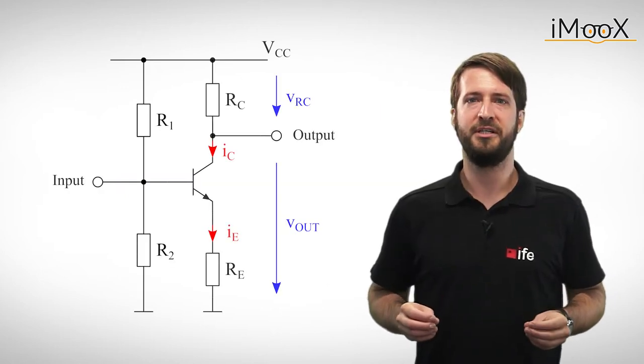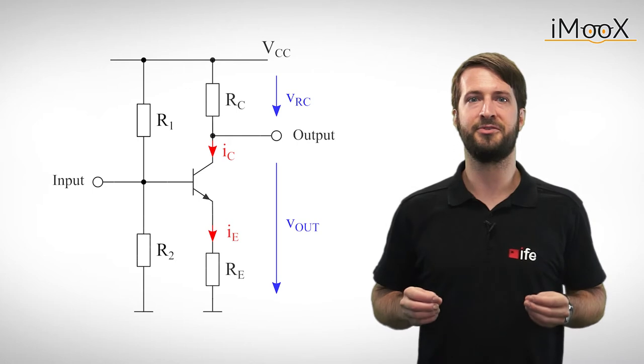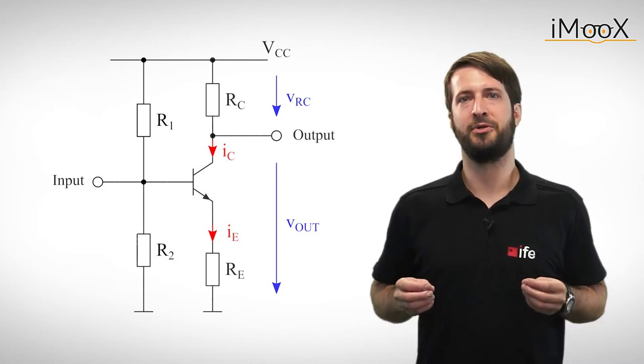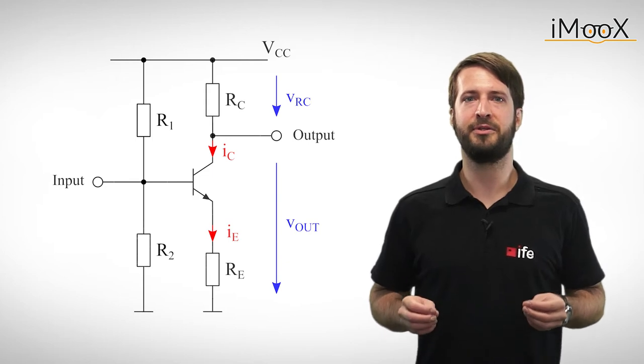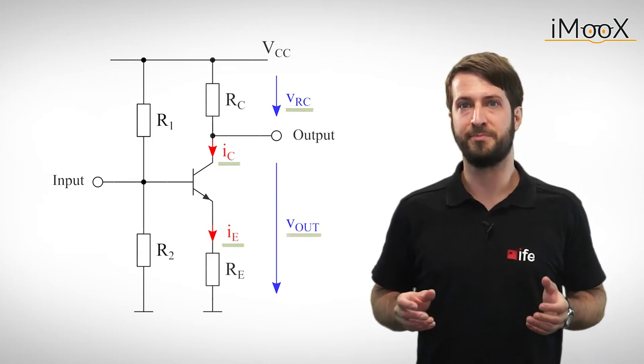We now only want to consider the alternating values of the circuit, since the signals we want to amplify are AC signals. It is common to describe the alternating values with small letters.